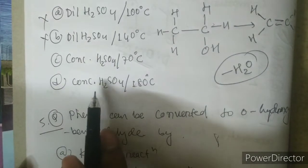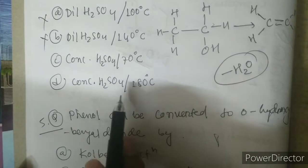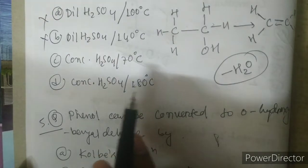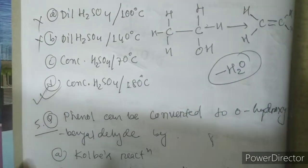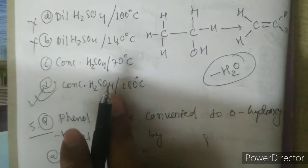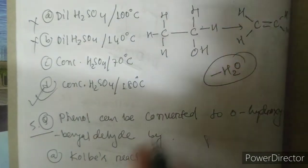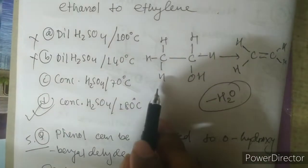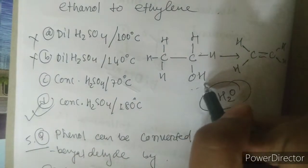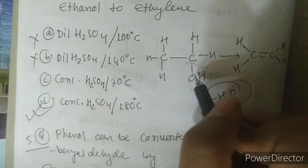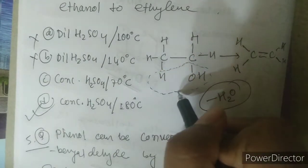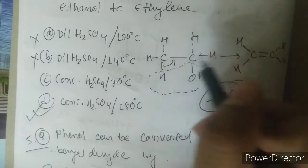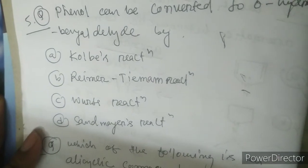The remaining options are concentrated H2SO4 at 70°C versus concentrated H2SO4 at 180°C. Some books say 170°C, so don't worry if you see 170° — both are acceptable. The correct answer is concentrated H2SO4 at 170–180°C. The mechanism: oxygen is electronegative so it pulls the bond, H+ leaves and OH- leaves, and you get ethylene.